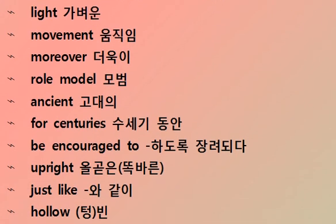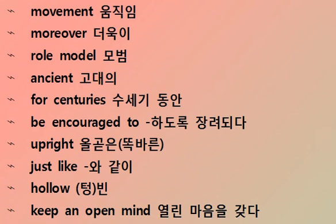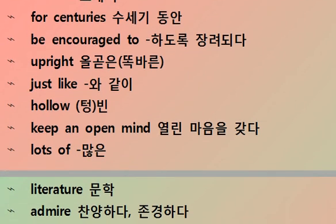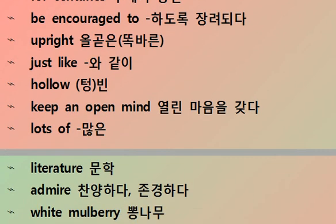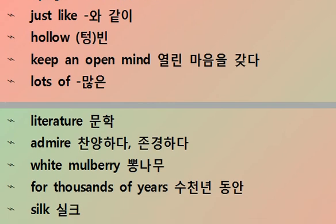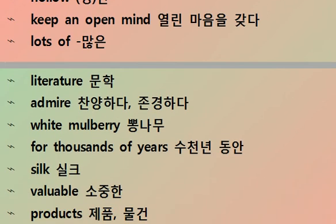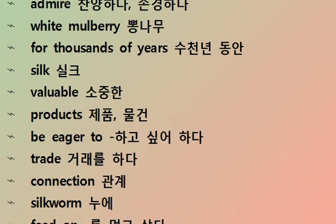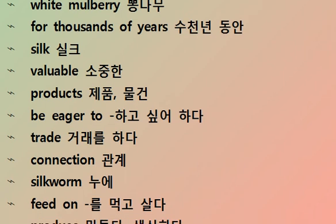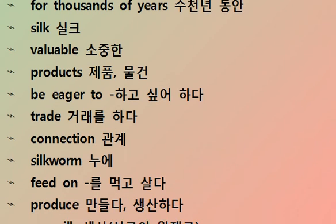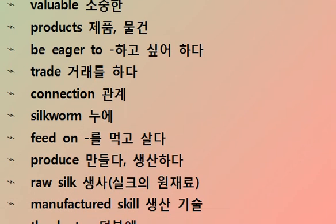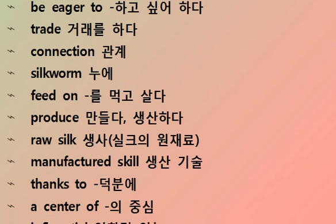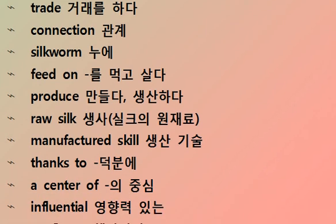Moreover, bamboo served as a role model in ancient times — for centuries people were encouraged to be upright, just like bamboo, and to keep an open mind. Lots of literature references this. White mulberry: for thousands of years, silk was among the most valuable products; silkworms feed on mulberry leaves to produce raw silk.